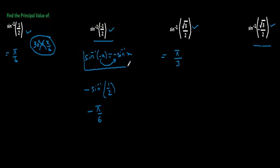Minus will be taken outside. Minus sine inverse √3/2, at which angle it becomes √3/2, 60 degrees, that is π/3. So the answer will be -π/3. So these are the answers of the respective questions. Thank you.